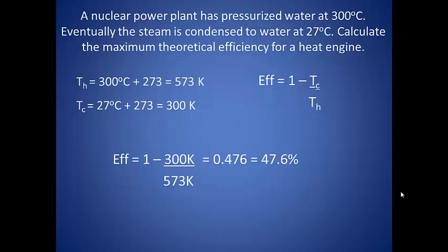So suppose a nuclear power plant has pressurized water at 300 degrees Celsius. Eventually the steam is condensed to water at 27 degrees Celsius. Calculate the maximum theoretical efficiency for a heat engine.